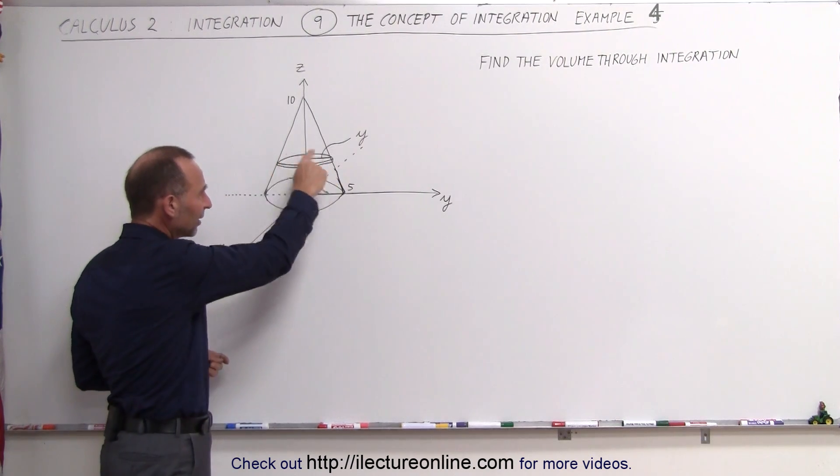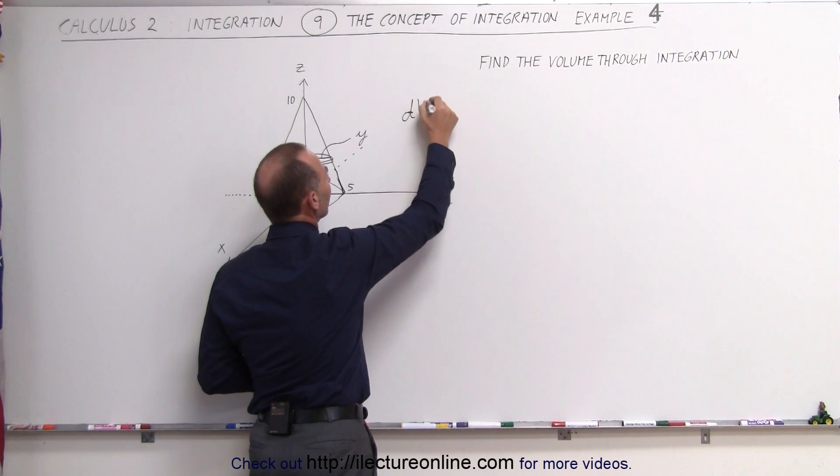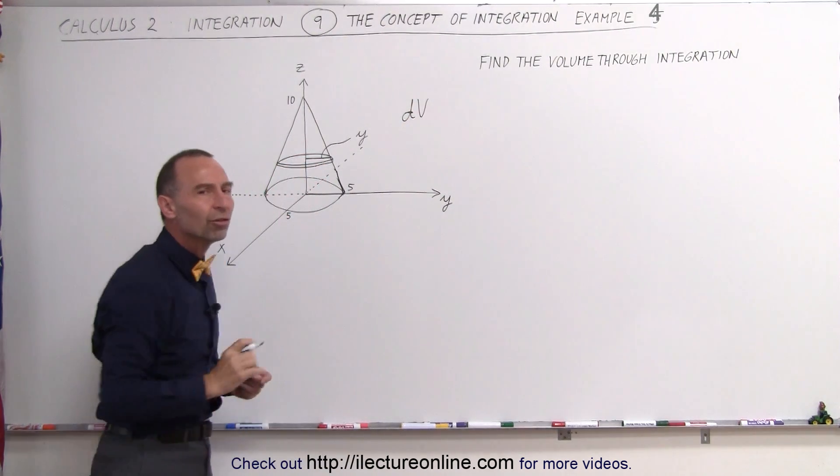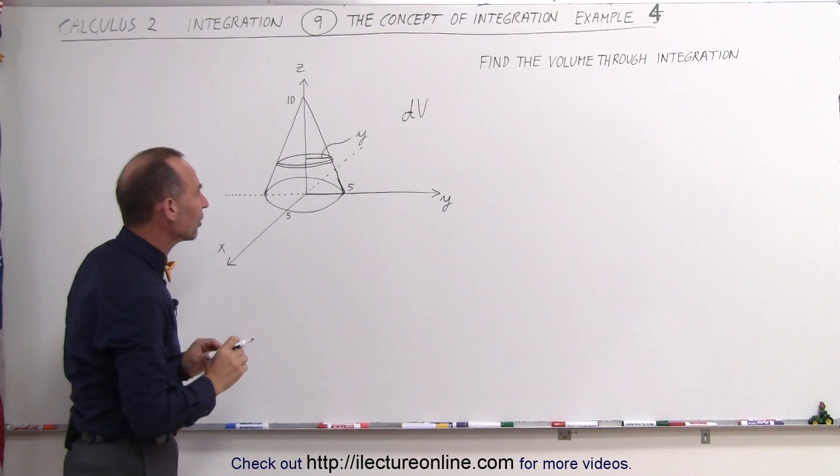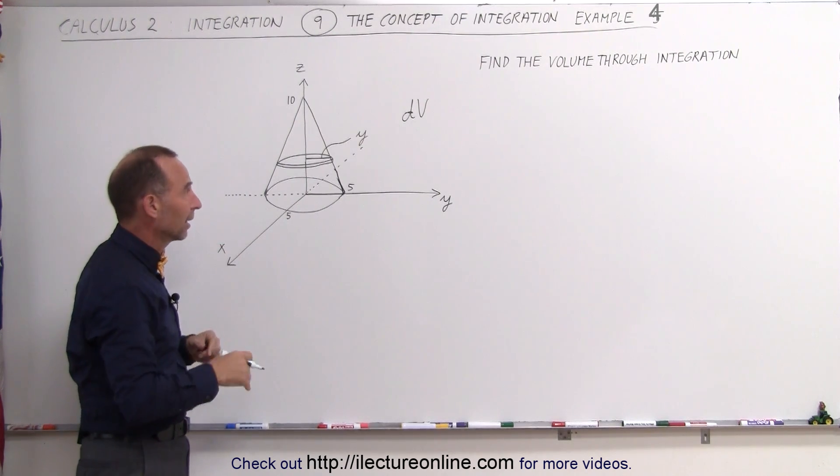But to find the volume of that little slice, we're going to call that volume a small little dV, a small little change in the volume, a tiny little amount of volume. And of course, the thinner we make the slice, the less volume we have there.